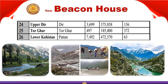The twenty-fifth district is Tor Ghar. Its headquarter is also in Tor Ghar. It has an area of 497 km², a population of 185,000, and a density of 372 people per km². The twenty-sixth district of Khyber Pakhtunkhwa has its headquarter in Patan. It has an area of 7,492 km², a population of 472,570, and a density of 63 people per km².